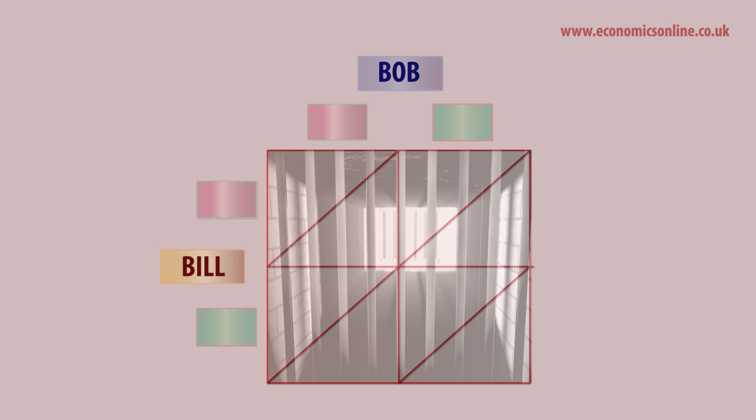In this game, two associates, Bill and Bob, have been arrested for a petty crime and placed in separate cells. The police officer suspects them of a more serious offense, although evidence of their guilt is weak. They are told that if they confess to the serious crime they will each get three years in jail. However, if they deny it, they will go to jail for two years for the lesser offense, of which there is strong evidence.